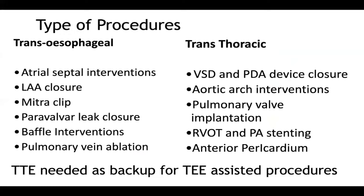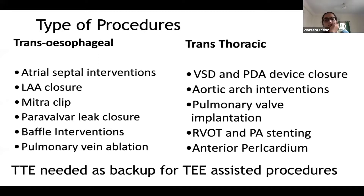Even in TEE-assisted procedures, trans thoracic echo should be available as a backup. For example, in an ASD closure, sometimes even with 70-degree retroflexion it can be very difficult to see the IVC rim on trans esophageal echo, and in that case trans thoracic echo will show the IVC rim better. Trans thoracic echo is preferred for procedures involving anterior and superior structures such as PDA device closure, VSD device closure, aortic arch interventions, pulmonary valve implantations, and imaging the anterior pericardium.